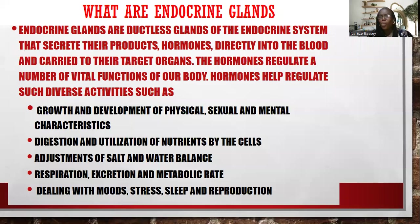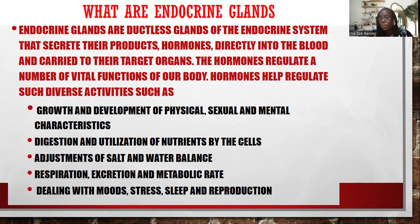So what are these endocrine glands? Endocrine glands are ductless glands of the endocrine system that secrete their products — hormones — directly into the circulatory system, and are carried to their target organs. Sometimes these target organs can be very far away. In doing so, the hormones regulate a number of very important functions in the body.